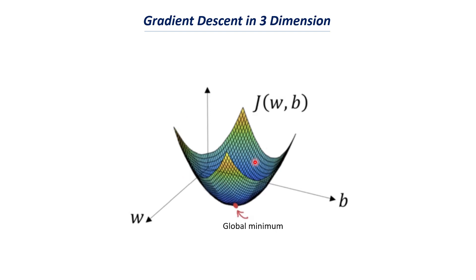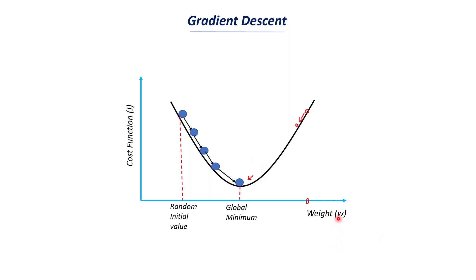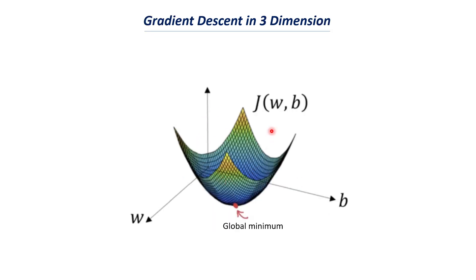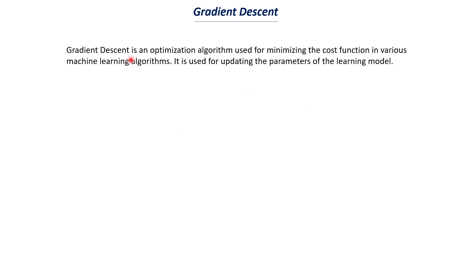In a three-dimensional space, gradient descent works with both the weight value and the bias value, finding the optimum for both. Gradient descent is an optimization algorithm used for minimizing the cost function. Minimizing the cost function means there is not much difference between the true value and the predicted value, which means the model is making correct predictions. It is used for updating the parameters — the weight and bias — of the learning model.